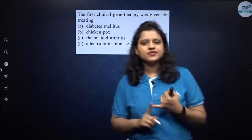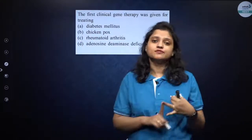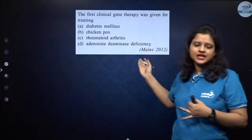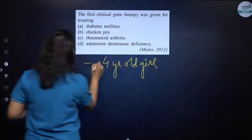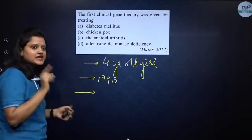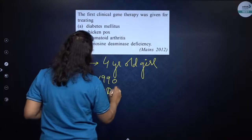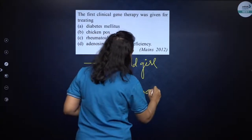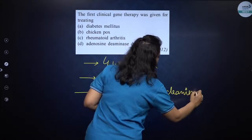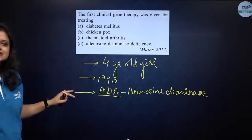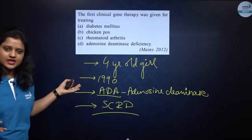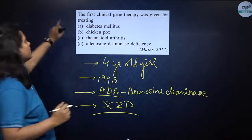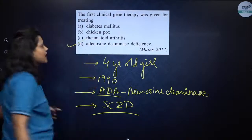The first clinical gene therapy was performed in a four-year-old girl in the year 1990. The enzyme that lacks is ADA — adenosine deaminase. Because of this deficiency, the disease is SCID — severe combined immunodeficiency. The correct option is adenosine deaminase deficiency.